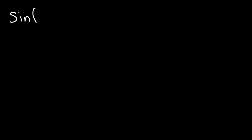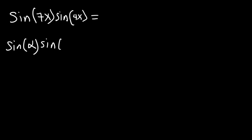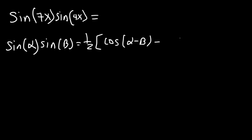Now let's use the product-to-sum formulas to simplify trigonometric expressions. Let's say we have sine 7x times sine 4x. How can we simplify this expression? If you recall, sine alpha times sine beta is equal to one half cosine(alpha minus beta) minus cosine(alpha plus beta). So in this example, alpha is 7x and beta is 4x.